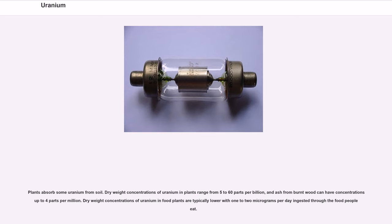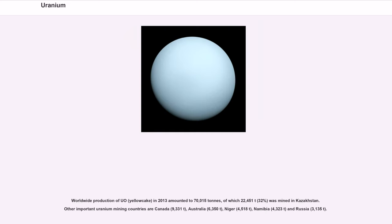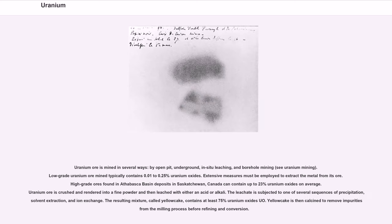Worldwide production of U3O8 (yellowcake) in 2013 amounted to 70,015 tons, of which 22,451 tons (32 percent) was mined in Kazakhstan. Other important uranium mining countries are Canada (9,331 tons), Australia (6,350 tons), Niger (4,518 tons), Namibia (4,323 tons), and Russia (3,135 tons). Uranium ore is mined in several ways: by open pit, underground, in-situ leaching, and borehole mining. Low-grade uranium ore mined typically contains 0.01 to 0.25 percent uranium oxides. Extensive measures must be employed to extract the metal from its ore. High-grade ore found in Athabasca Basin deposits in Saskatchewan, Canada can contain up to 23 percent uranium oxides on average.